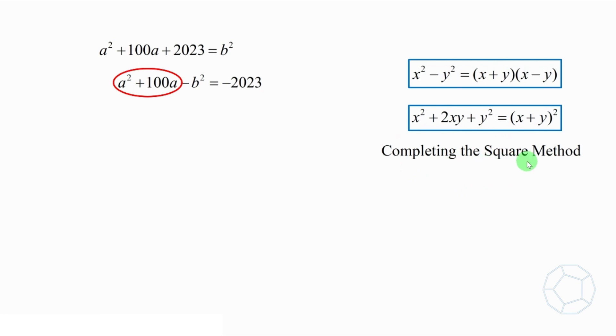This method is called the completing the square method. In other words, we should add 50^2 on both sides of the equation. The three terms in the brackets can be factorized as (a + 50)^2. So the equation is simplified, and now the left-hand side is the difference of two squares, while the right-hand side is equal to 477.